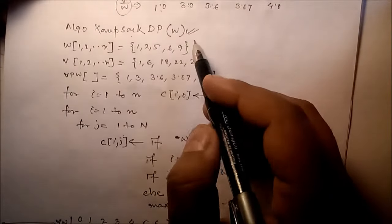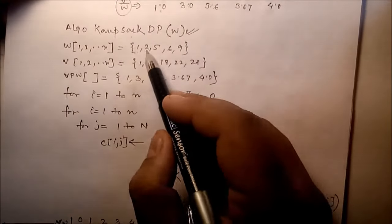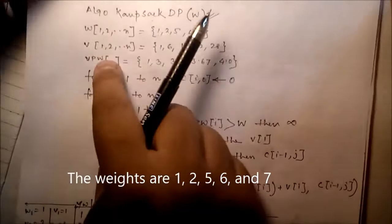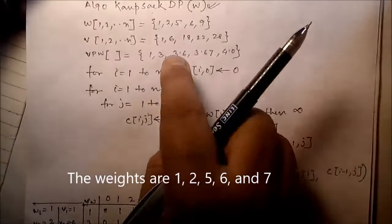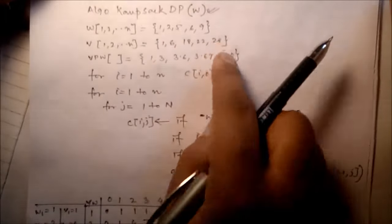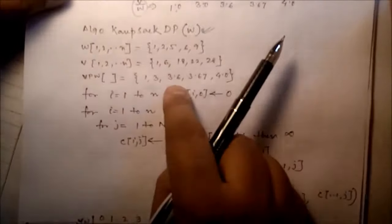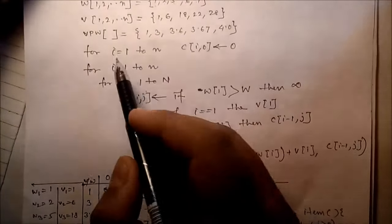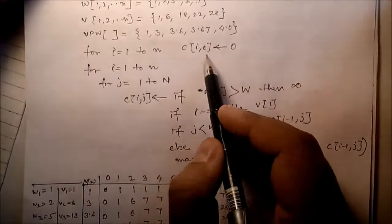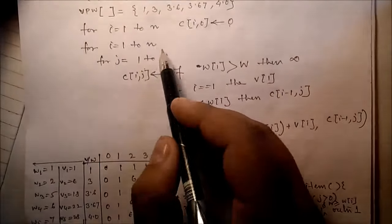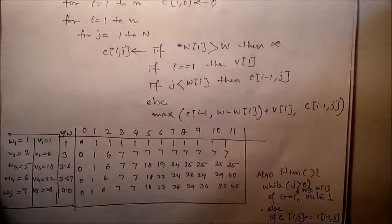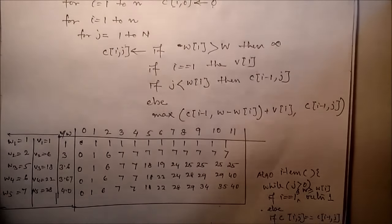The weights are 1, 2, 5, 6, 9 and the values are 1, 6, 18, 22, 28. Value per weight: 1, 3, 3.6, 3.67, and 4. Now the algorithm: for i = 1 to n, c[i][0] = 0; for i = 1 to n and for j = 1 to n, you have to use the following steps.